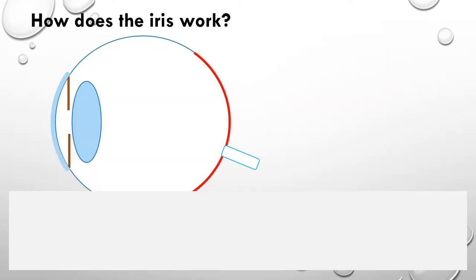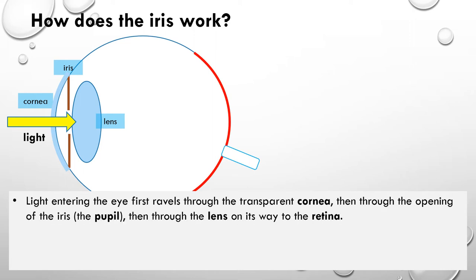OK, so how does the iris work? What happens is we have this transparent layer at the front called the cornea, and we've got the lens. Light travels through the transparent cornea. And then what the iris does is it will either open or close to allow either more or less light to go through the lens into the back of the eye onto the retina.